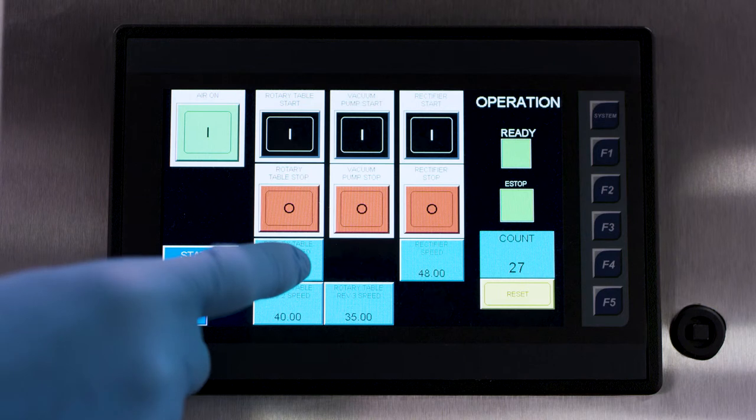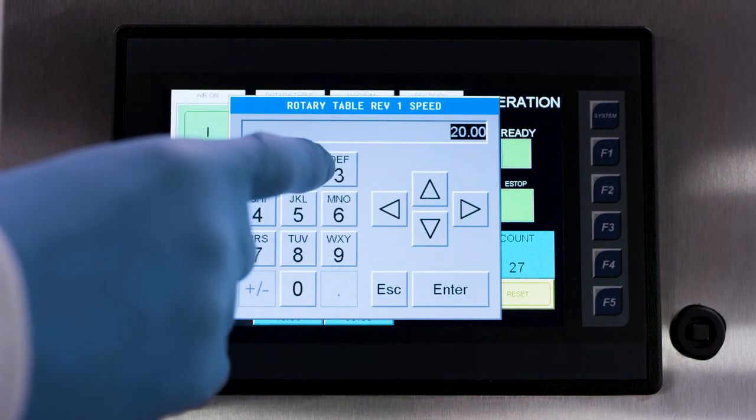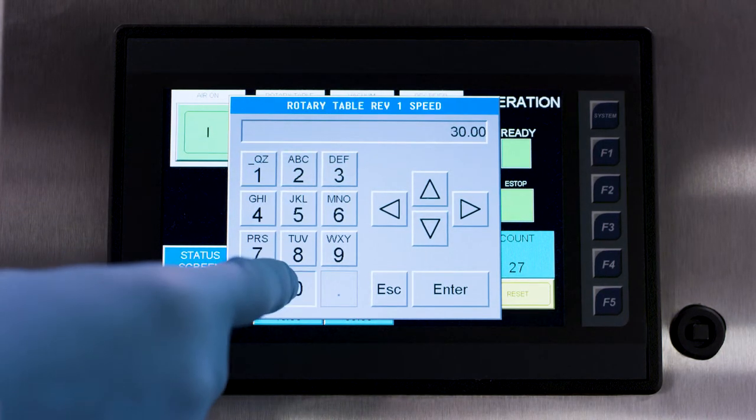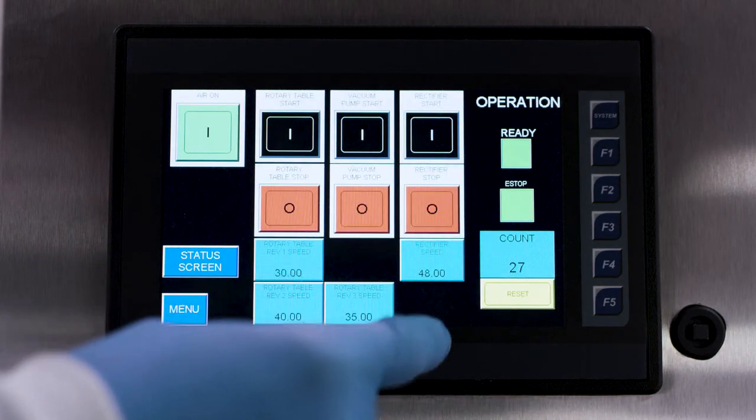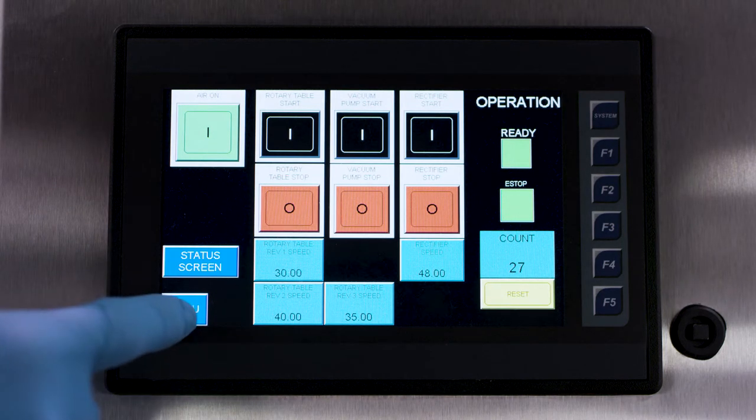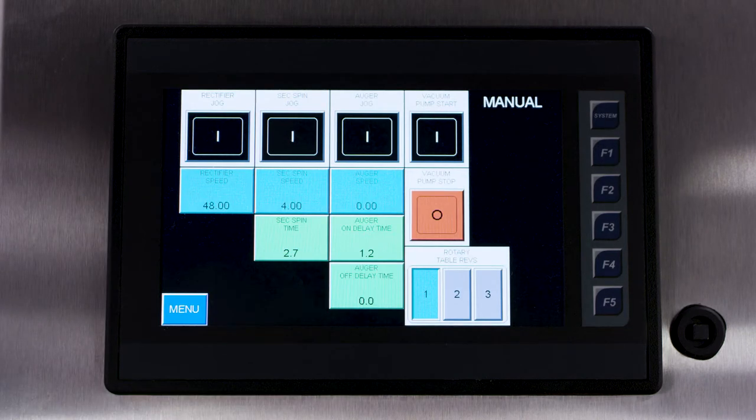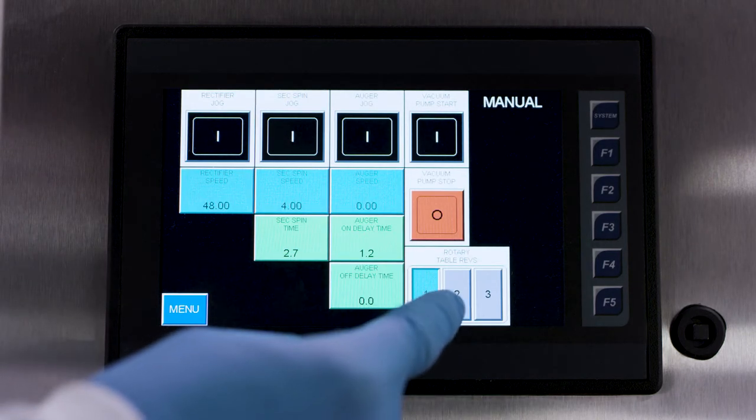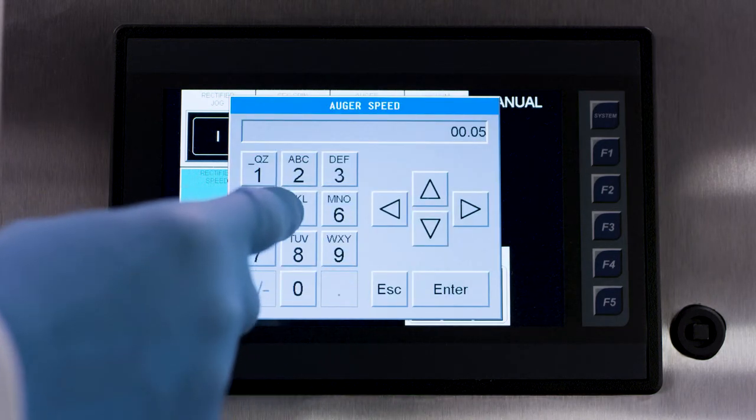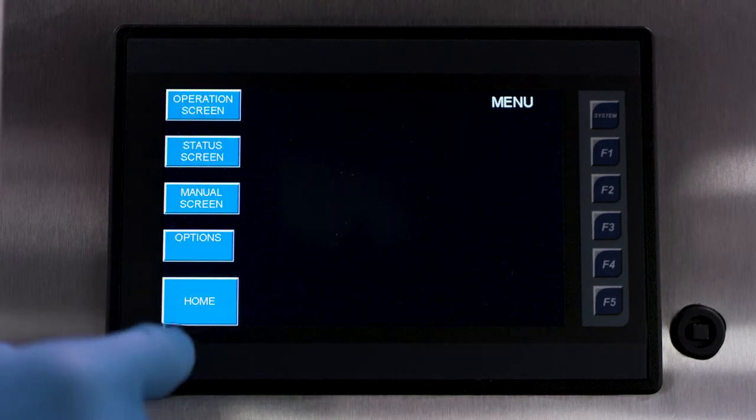Adjust the filling speed on the HMI screen by pressing the rotary table speed option. If you're filling a new product for the first time, select a range in the upper speed between 30 and 60 hertz. Generally, running the rotary table at a slower speed will increase capsule fill weights. You can change the number of rotary table revolutions from one to three by selecting manual screen on the HMI and choosing your desired option. The auger motor speed can also be adjusted in the manual screen menu. To return to the rotary table operation screen, select menu and then operation screen.